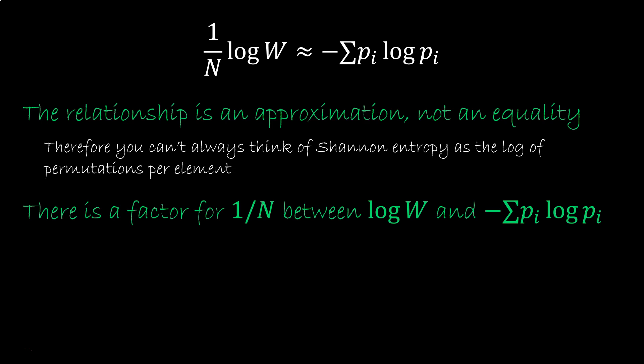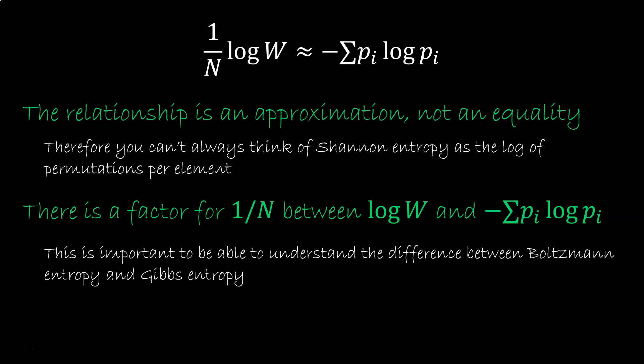Second, note the factor of 1 over N between log W and minus Σp log p. This will play a key role in the difference between the Boltzmann entropy and the Gibbs entropy.